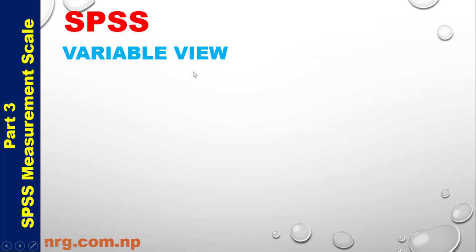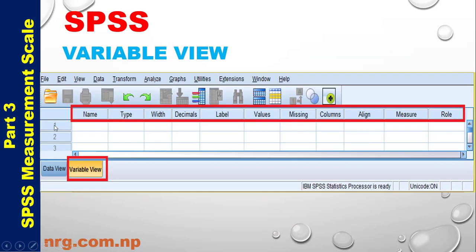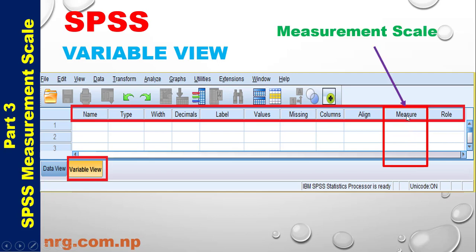In SPSS there are two views: Variable View and Data View. In the second-last column of Variable View, there is 'Measure', which is the Measurement Scale.